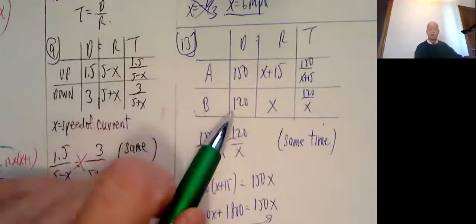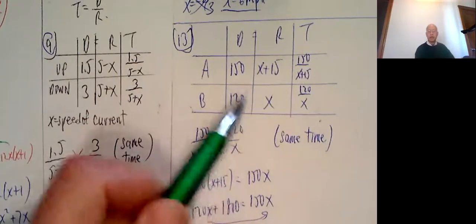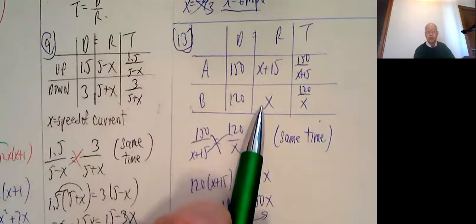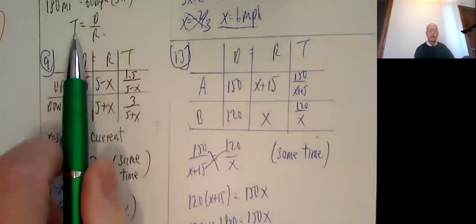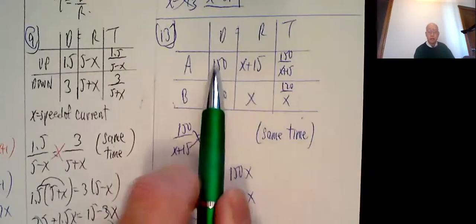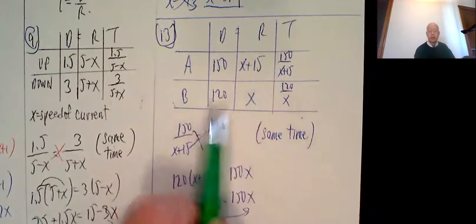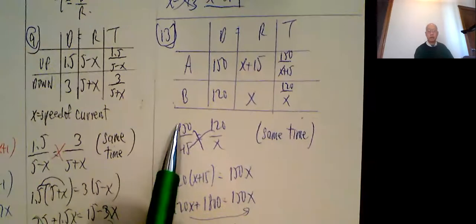So 150, 120. We are told that train A goes 15 miles an hour faster, so if I call the speed of B, train B, x, then train A has to be x plus 15. And just like over here, time is distance divided by rate. So distance divided by rate, 150 over x plus 15. Distance divided by rate, 120 over x. And since it says the same time, we set them equal.